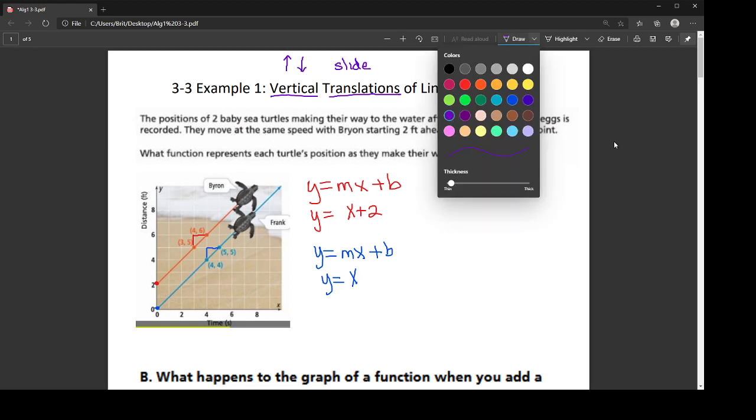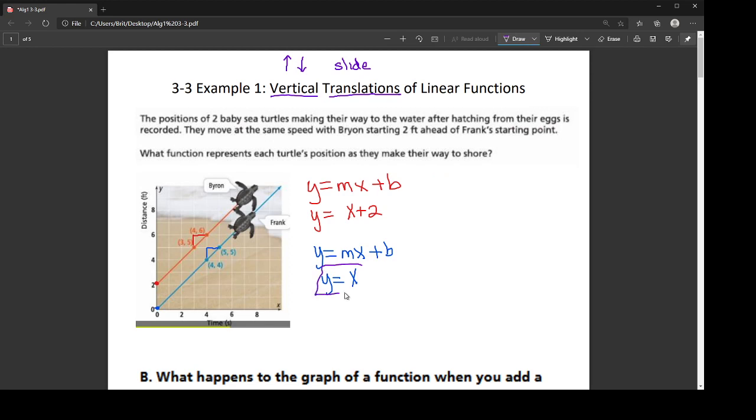And so what happens is I'm given the equation y equals x, which is just a perfectly diagonal line. And then the equation y equals x plus 2. So the only difference between those two equations is the plus 2 on Byron's equation. And that plus 2 is the vertical slide.